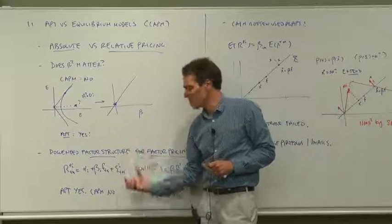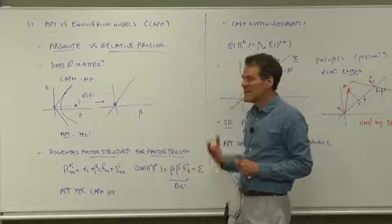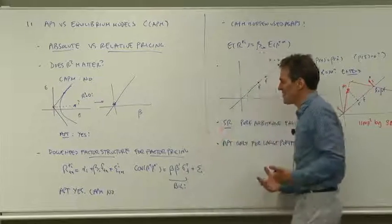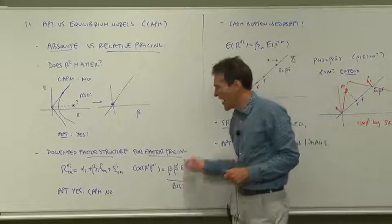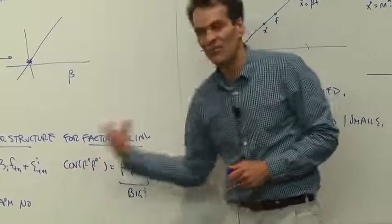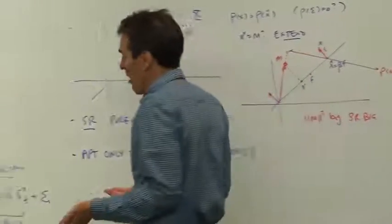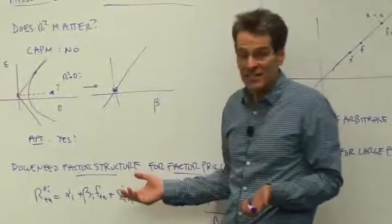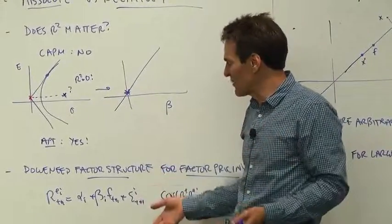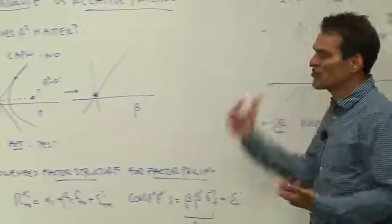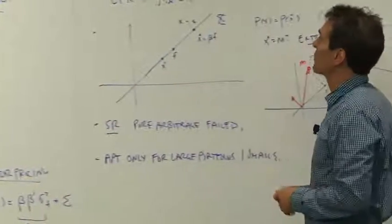Does that factor structure matter? To the APT, yes. The key assumption of the APT is that the common factors explain a lot of the variance of the returns you're looking at. To the CAPM, it doesn't matter at all. With an absolute pricing model, factor structure among the returns doesn't really matter much at all for the pricing.